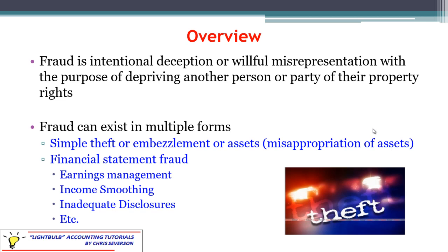The next category is financial statement fraud, which has a variety of different types. One example is earnings management, which means that managers or accountants of a company are intentionally shifting revenues or expenses to a different period to make the results look the way they want, even though it's not the truthful year that item should be reported in. Income smoothing is tied right into that — they're trying to make income appear on a smooth upward climb when in reality it may be more volatile.